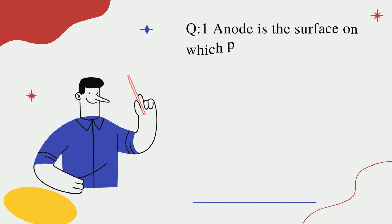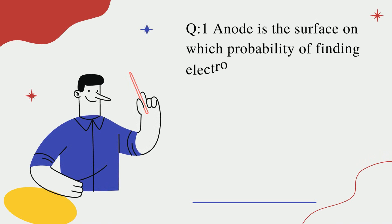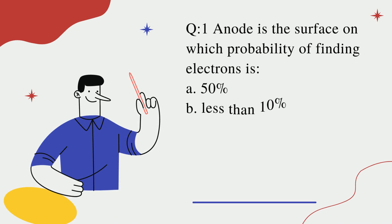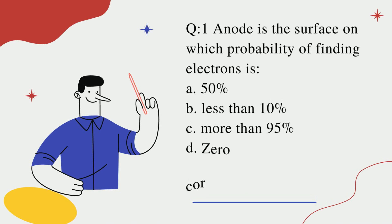Question number one: Anode is the surface on which probability of finding electrons is? A. 50%? B. Less than 10%? C. More than 95%? D. 0? Correct option is D.